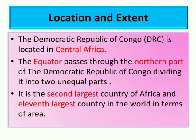The Democratic Republic of Congo is located in the central part of Africa. The equator passes through the northern part of the country, dividing it into two unequal parts. It is the second largest country in Africa and the eleventh largest country in the world in terms of area.